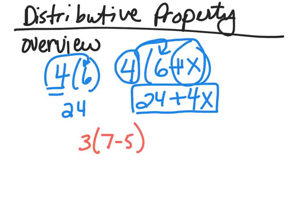But really it's wrong because order of operations, we should be solving inside the parentheses. But they want you to distribute it, so we're going to do that. So 3 times 7, this term times that one is 21. And 3 times negative 5 would be negative 15. And if you look at that, you can simplify it and get 6.